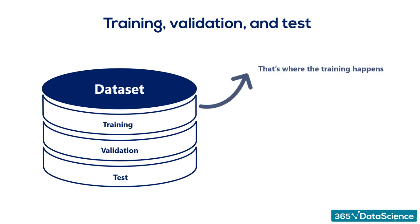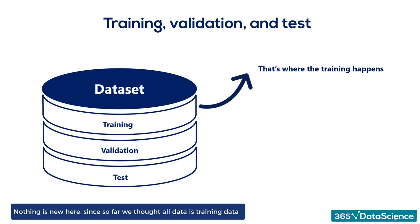As its name suggests, it helps us train the model to its final form. As you should know, that's the place where we perform everything we've seen until now. Nothing is new here since so far, we thought all data is training data, but we intentionally labeled the Python variables training data instead of data in the exercises.